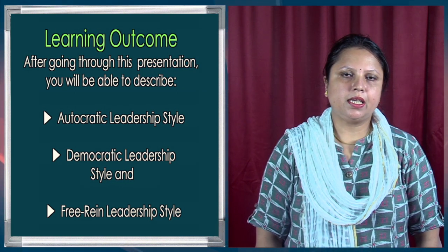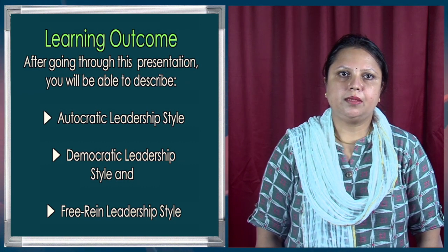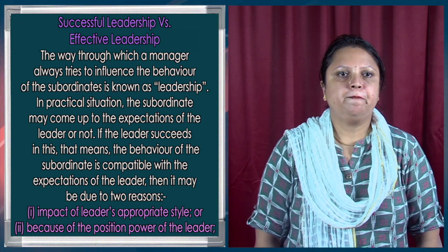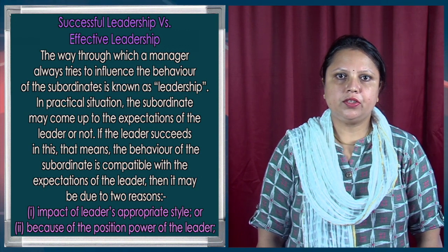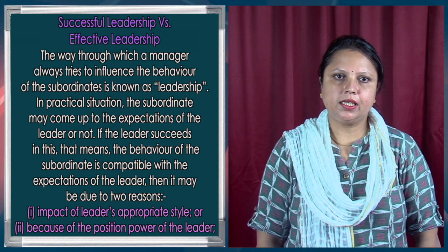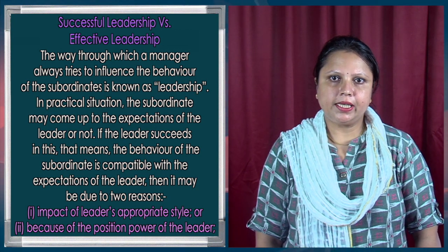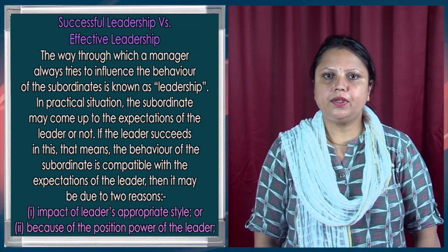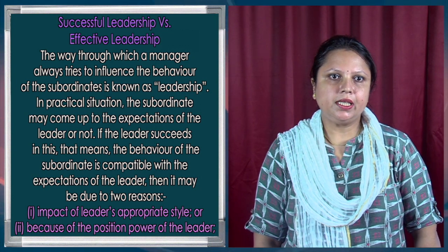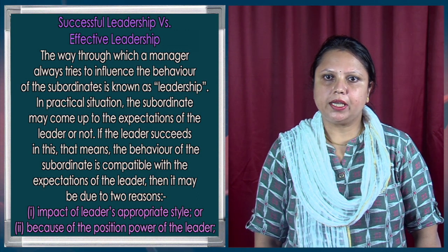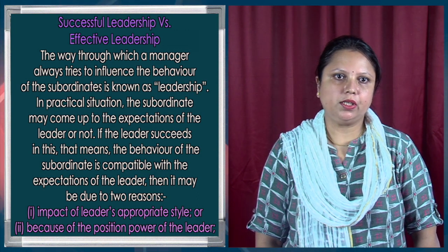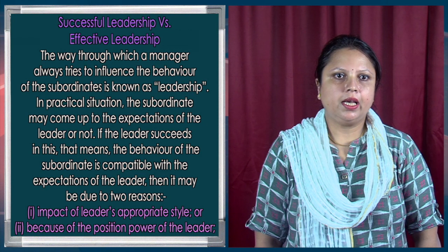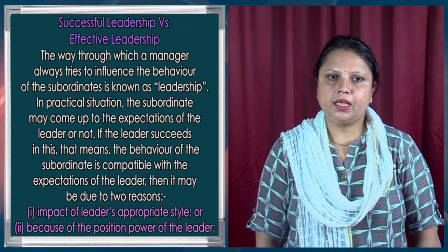Sometimes we have seen that some leaders are considered successful and sometimes we say some leaders were effective. So what is the difference between effectiveness and success? The way through which a manager tries to influence the behavior of subordinates is known as leadership. In practical situations, the subordinate may or may not come up to the expectations of the leader. If the leader succeeds, it may be due to two reasons: the impact of the leader is appropriate, or because of the position power of the leader.